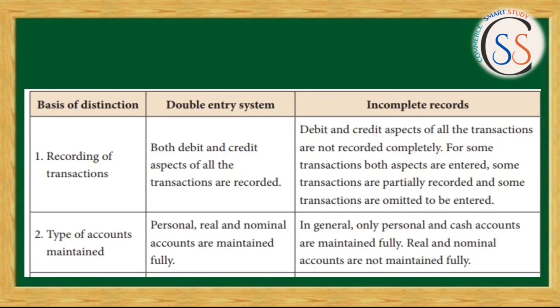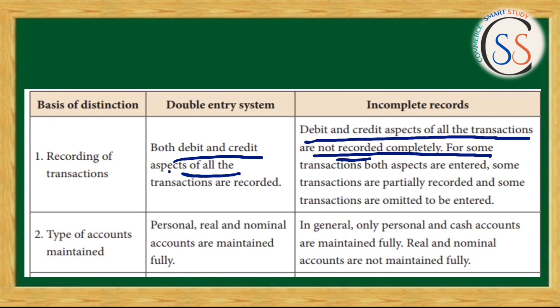The first difference is recording of transactions. In the Double Entry System, both debit and credit aspects are recorded. In the Single Entry System, debit and credit aspects of all transactions are not recorded. So in the Double Entry System, both debit and credit aspects are recorded, whereas in Single Entry System they are not.